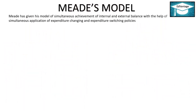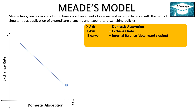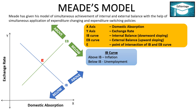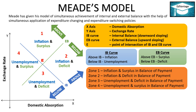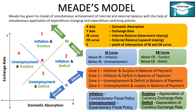Mead's Model: Mead has given his model of simultaneous achievement of internal and external balance with the help of simultaneous application of expenditure changing and expenditure switching policies. On the x-axis we have domestic absorption; on the y-axis we have exchange rate. The IB curve shows internal balance and is downward sloping. The EB curve shows external balance and is upward sloping. E is the point of intersection. Above the IB curve we have inflation; below we have unemployment. Above the EB curve we have surplus; below we have deficit. The graph is divided into four zones. For inflation and unemployment we use fiscal policy; for surplus and deficit we use appreciation or depreciation of currency.